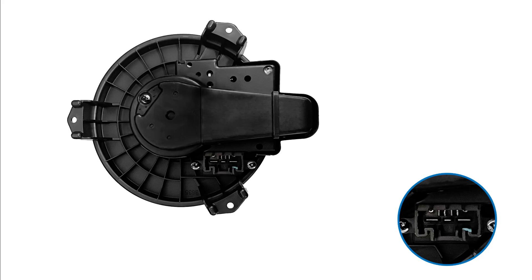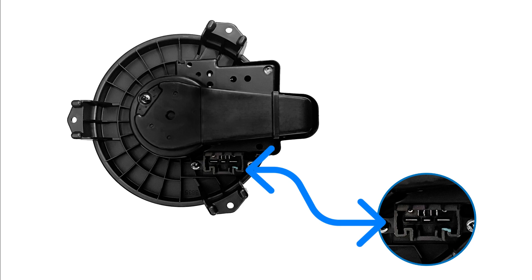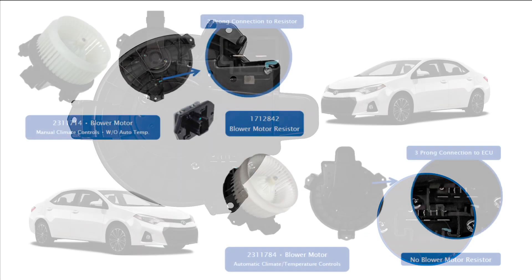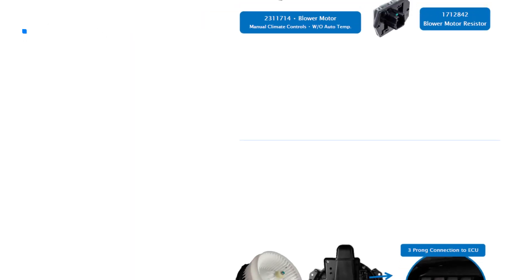This type of blower motor can be identified by a three-pronged terminal connection on the back side of the blower motor. Note that two vehicles with the same year, make, engine, and model may not feature the same blower motor design.